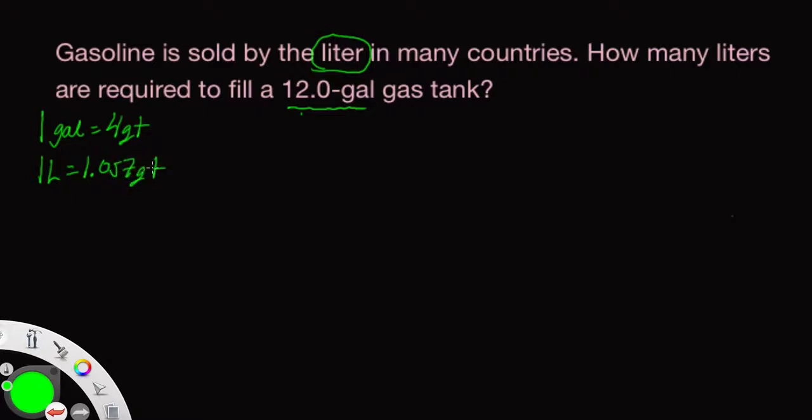We're going to use these two bits of information to convert the starting 12.0 gallons into liters. Let's get started. We have gallons here; the only thing we can use to cancel out the gallons is this first equivalency. We want gallons to be down on the bottom. Up on top is going to be four quarts. The gallons nicely cancel and we're left with quarts.